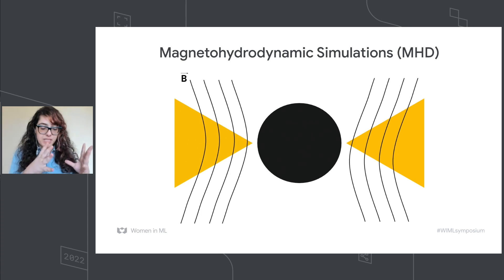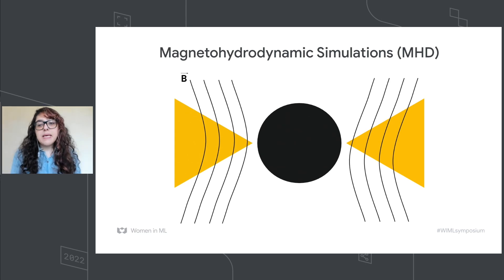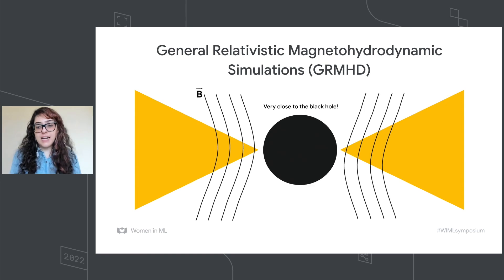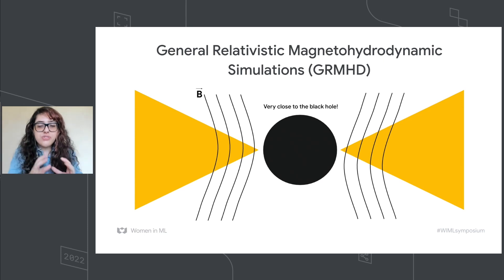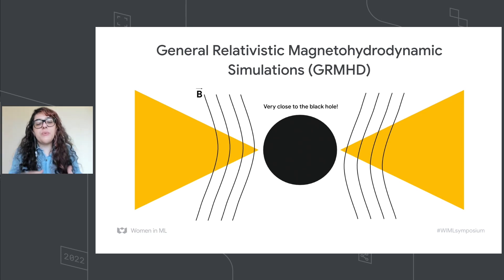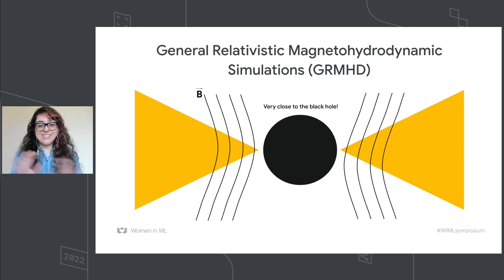MHD joins fluid dynamics equations with magnetic field equations. But black holes are not simple to understand physically. We need general relativity — Einstein's general relativity — especially when you go very, very close to the black hole. So when studying really close to the black hole, you need general relativity, magnetic fields, and fluid dynamics equations together. It's three different areas of physics in a single object.